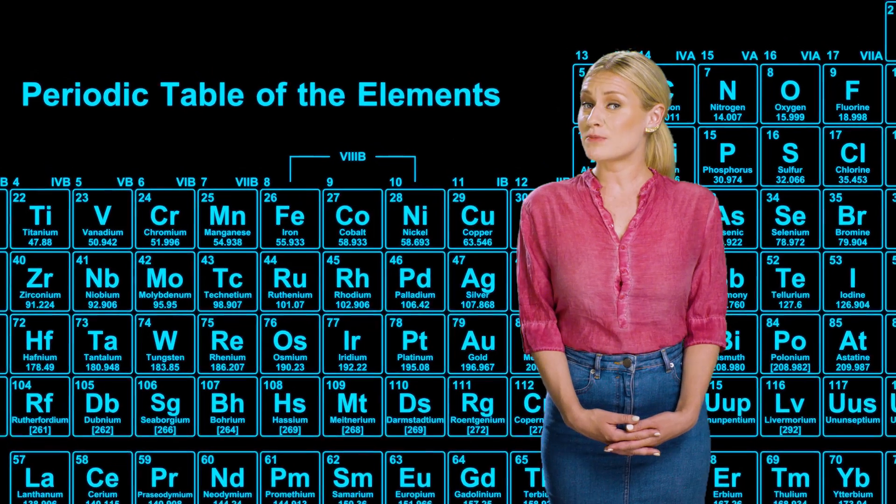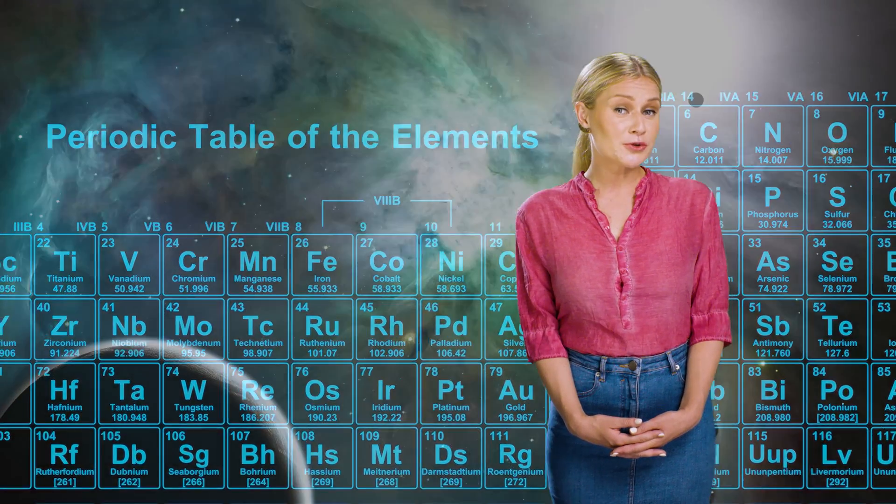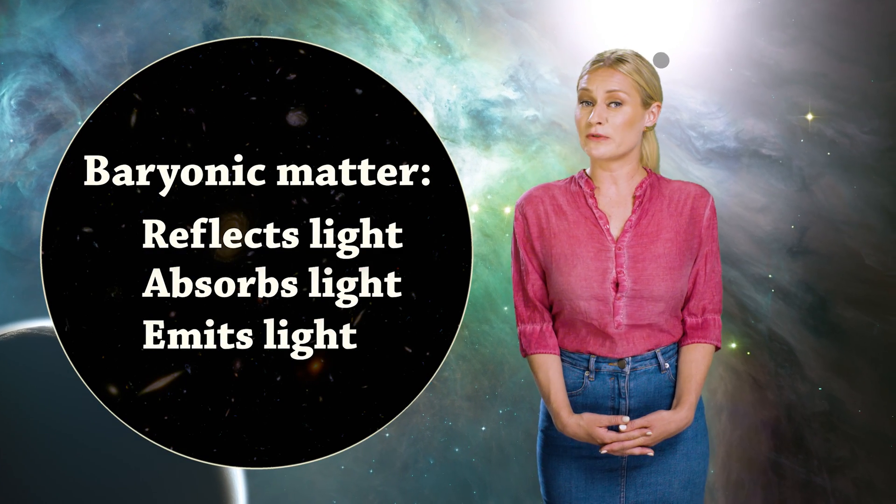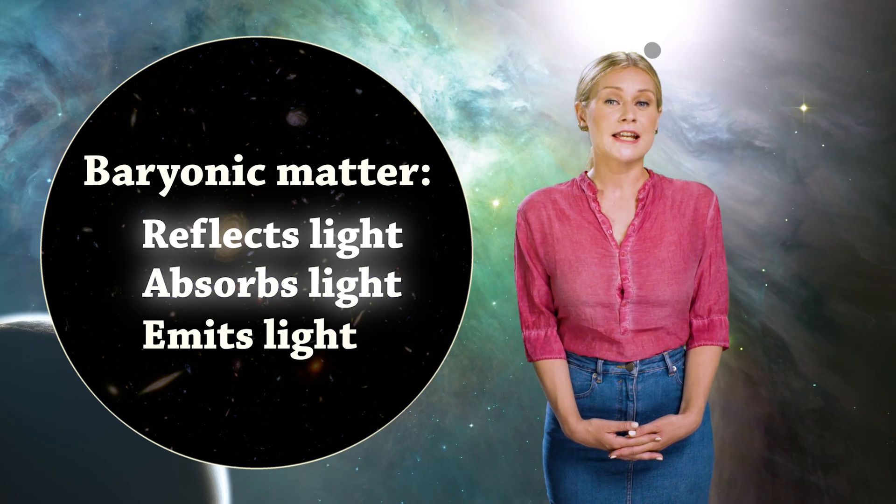Normally when we say matter, we're referring to the elements in the periodic table, which is what for example you, me, planets, and stars are made of. We are visible matter, also called baryonic matter, that interacts with light in the sense that we reflect light, absorb light, and emit light.